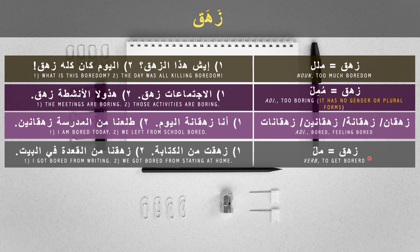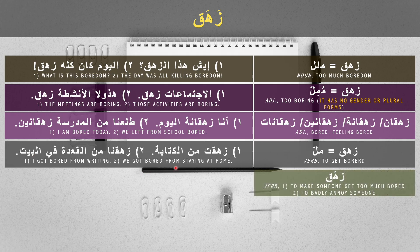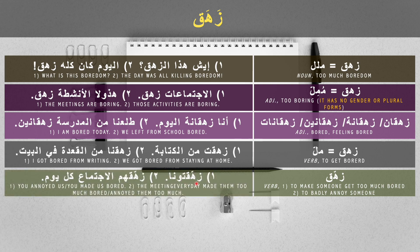Zahag as a verb means to feel bored or get bored. For example: 'zaheqt minal kitaba' — I got bored from writing; 'zaheqna minal qaada fil bit' — we got bored from staying at home. With a shadda on the middle letter, zahag means to make someone get very bored or to badly annoy someone. For example, 'zahhaqtuna' means you (plural) annoyed us too much or made us feel very bored. Another example: 'zahhaqtuna kul yum' — the meeting every day made them killingly bored.